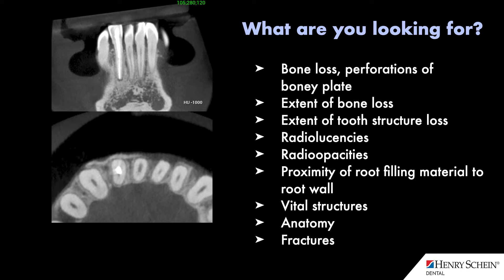We also want to look at the anatomy itself. Whenever we're evaluating the root canal treatment, we want to see if it respects the anatomy — meaning if it's centered within the tooth all the way down the root. We want to see if it's an adequate length and size, or if it's excessive at any point, and if there is a very thin root remaining at any point. If there is a very thin root wall left after root canal treatment, sometimes that may affect the prognosis of the tooth.